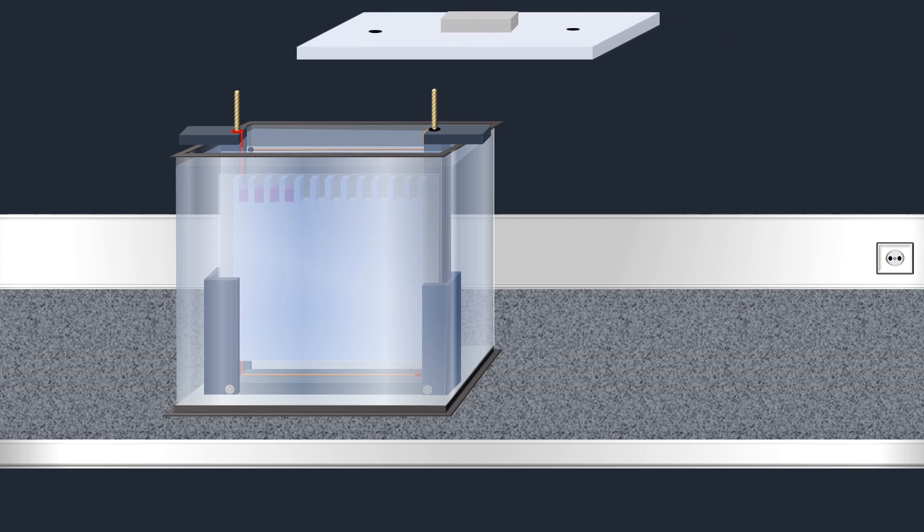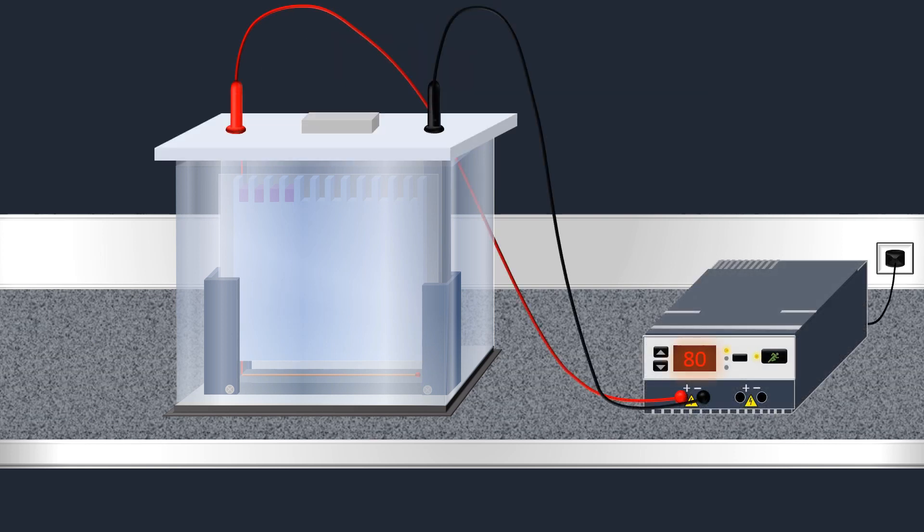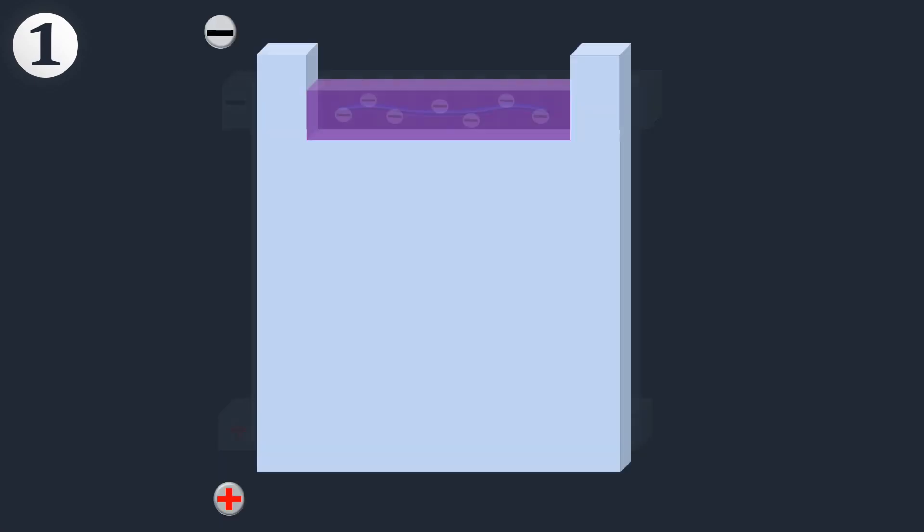After the sample application procedure, an electric field is applied across the gel, causing the negatively charged proteins to migrate across the gel away from the negative electrode and towards the positive electrode.